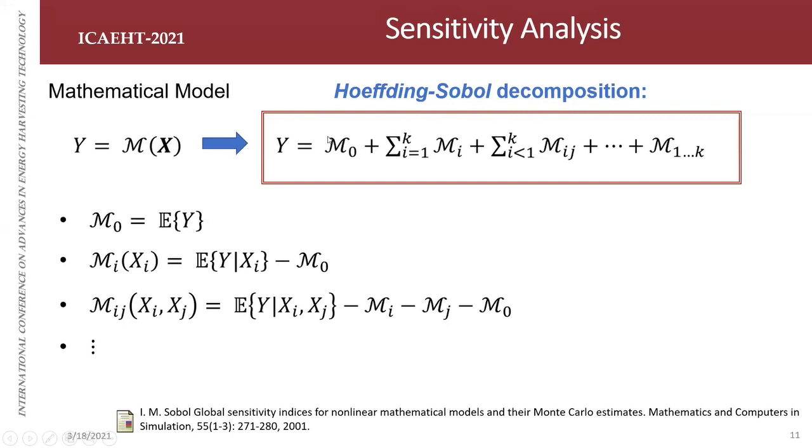We define our output in terms of the total mean and conditional means. The first term is our total mean M₀, the second term is the sum of conditional means in terms of parameter xᵢ minus the total mean, the third term is conditional means by parameters xᵢ and xⱼ, and so on. The great property about this decomposition is its orthogonality in terms of the conditional means.